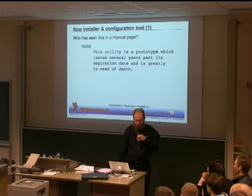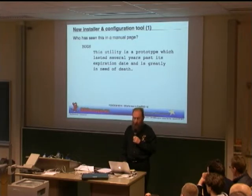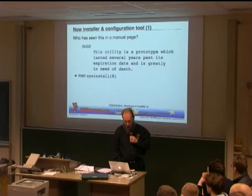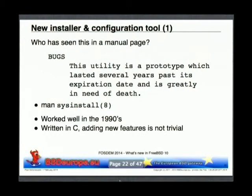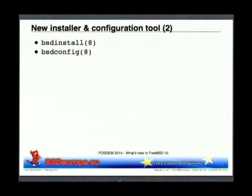That was around 1993. In FreeBSD 9 we already got the new manual page — one problem with sysinstall was it's completely written in C, and while in some places quite ingenious, adding new stuff is not that easy. So sysinstall has always lagged behind on other developments like new file systems. We got a new installer called BSD install in FreeBSD 9, but sysinstall was still there. FreeBSD 10 does not have sysinstall anymore — at least not by default. You can still compile it if you want, but it's not there by default.